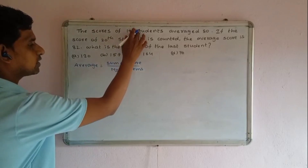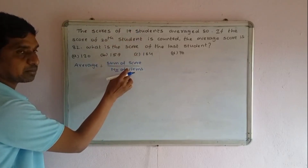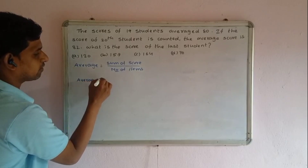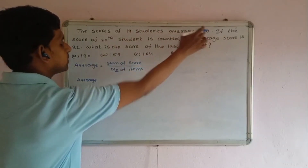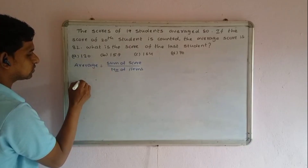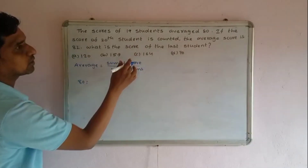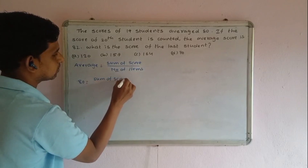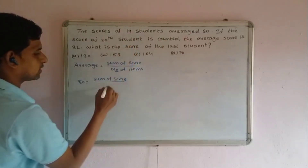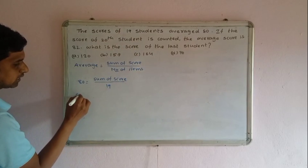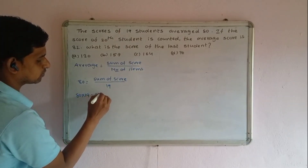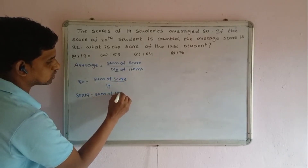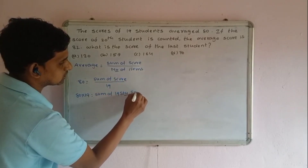How many students are there? 19 students. So sum of scores equals average multiplied by number of items. Sum of 19 students' scores equals 80 into 19.